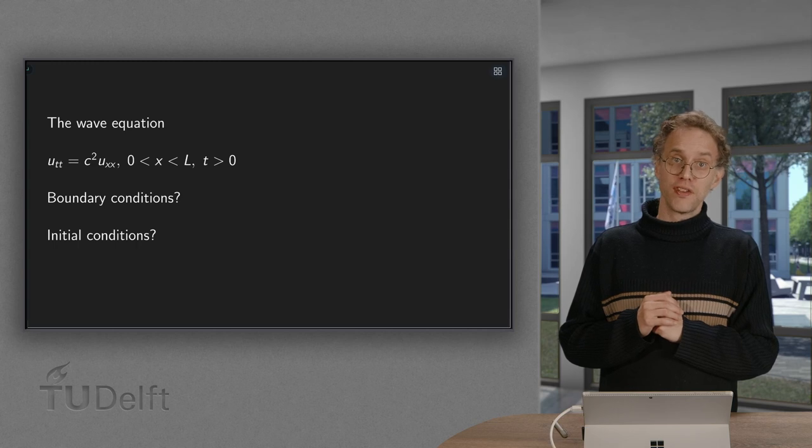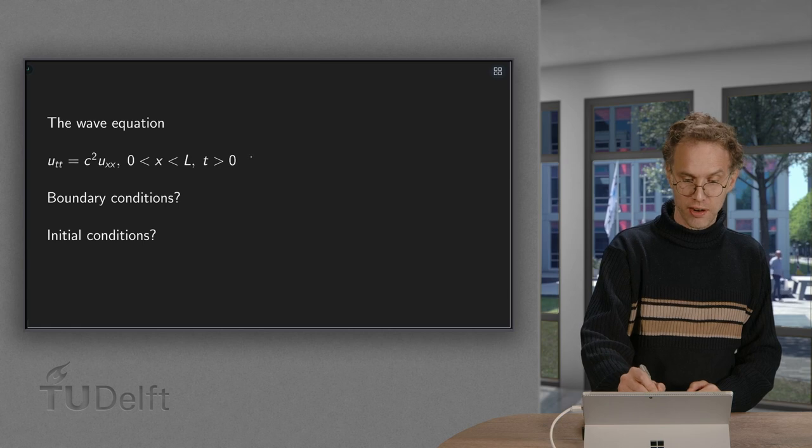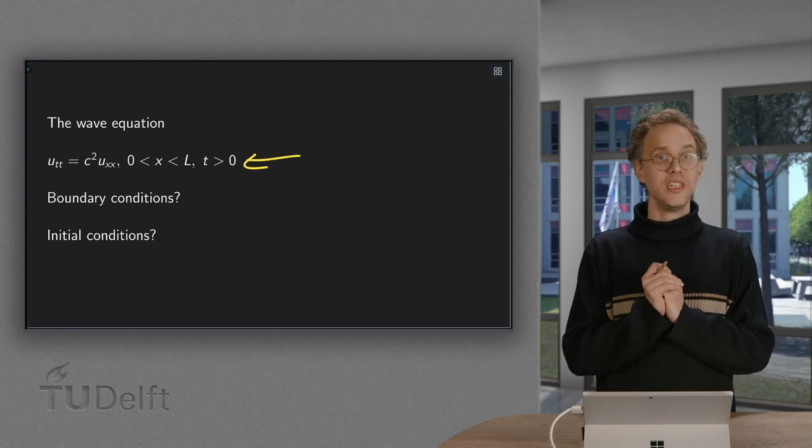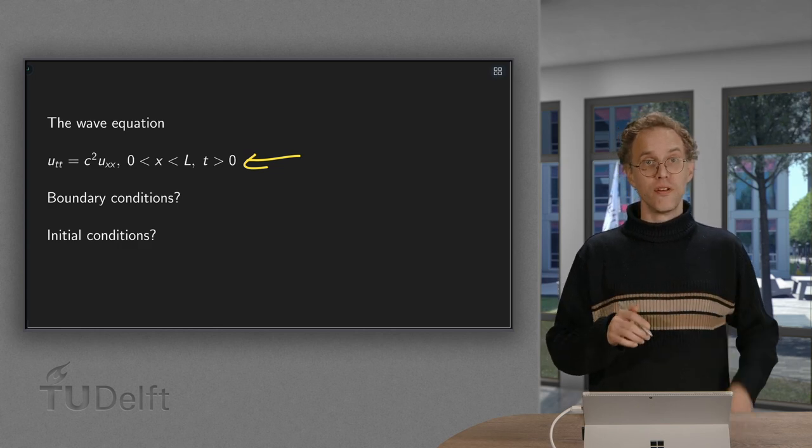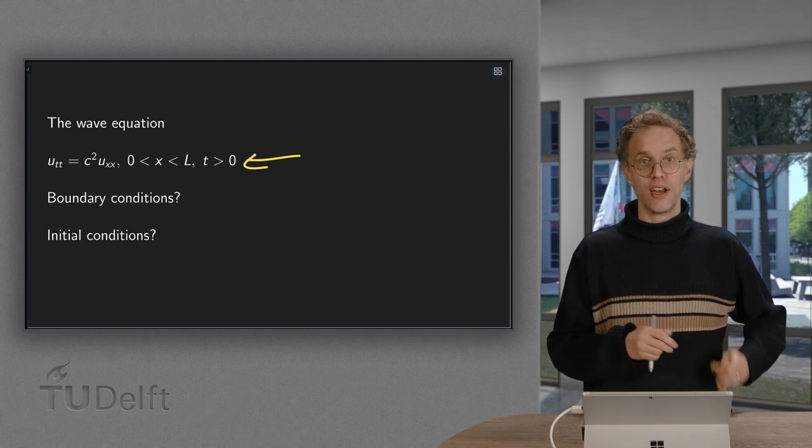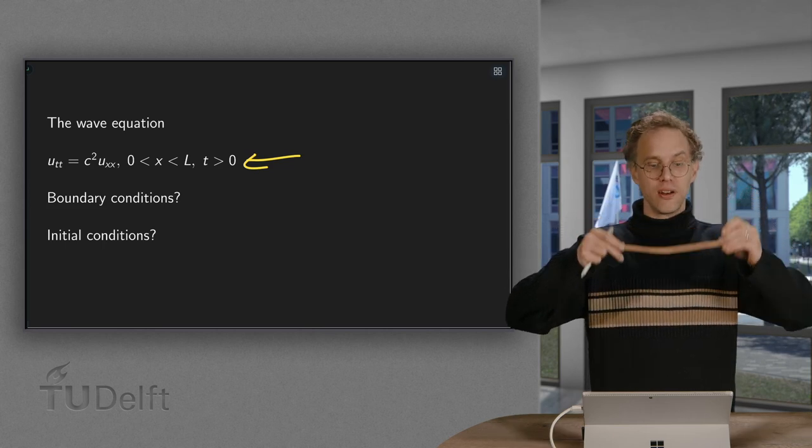As you will see in this video, we already have our PDE: u_tt equals some given c squared times u_xx, for x between some 0 and capital L. So x is between 0 and L, and t positive.